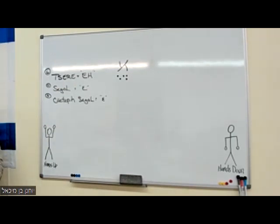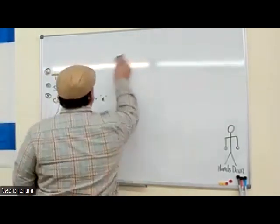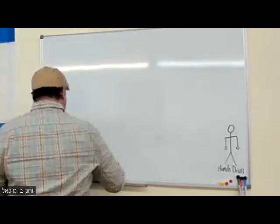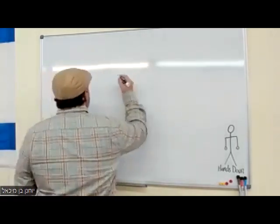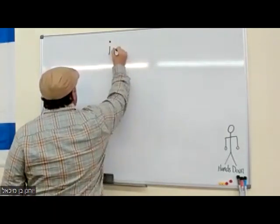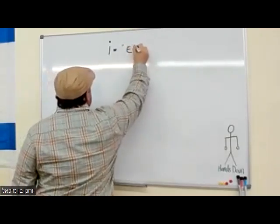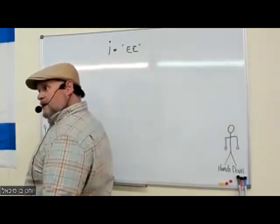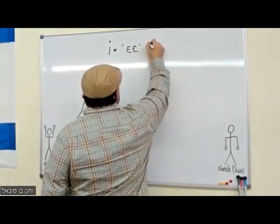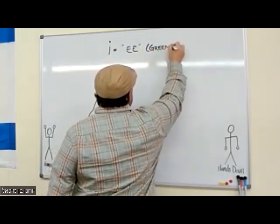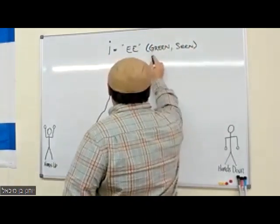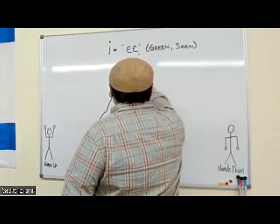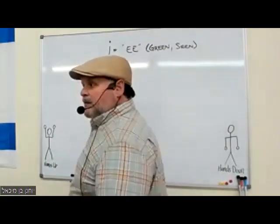Now let's look at i-type vowels. For all intents and purposes, i-type vowels make the same sound as the two e's in the word 'green,' or 'teen,' or 'seen.' So in Hebrew, the i makes an 'ee' sound — like 'green' or 'seen.' Even though we call them i-type vowels, they produce the 'ee' sound.